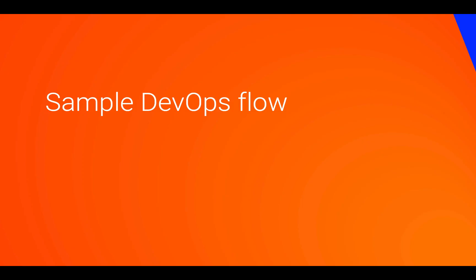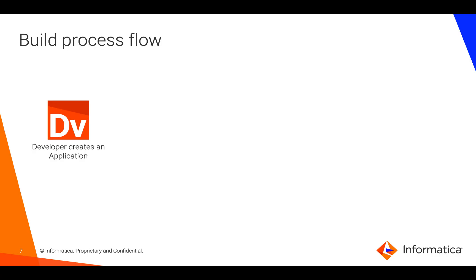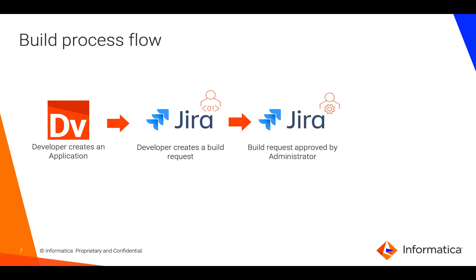Let's take a quick look at how such a flow can be automated using tools such as Jira and Jenkins. As part of a build flow, a developer creates an application and then creates a Jira ticket inside their ticketing system to track the build request. This is typically approved by a build request administrator, also known as a release manager. Once approved, a process is launched using Jenkins to initiate the build process.